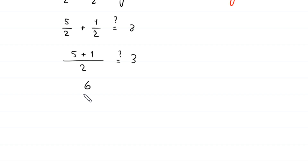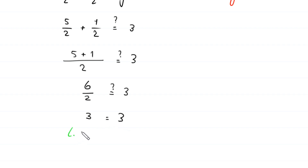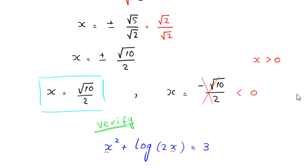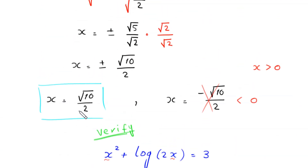6 divided by 2 is 3, which equals 3. The left-hand side equals the right-hand side, confirming that x equals root 10 over 2 is the valid solution to this equation.